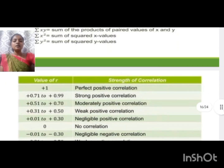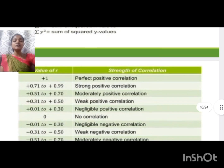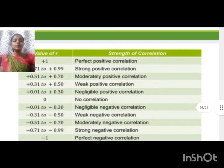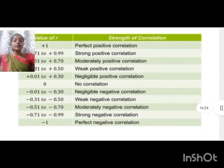The limit of the coefficient of correlations lies between minus 1 to plus 1. If r = +1, it is a perfect positive correlation. If r = −1, it is a perfect negative correlation. If r = 0, there is no correlation.